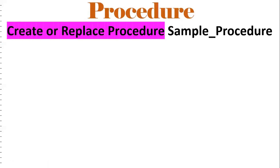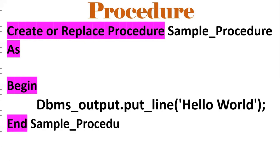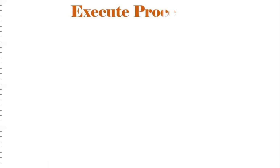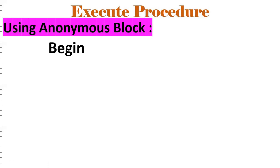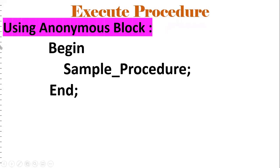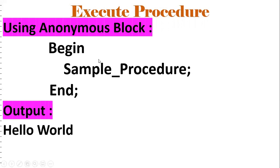Next, you should know how to write a sample procedure. The syntax is: CREATE OR REPLACE PROCEDURE procedure_name AS BEGIN ... END. DBMS_OUTPUT is used to see the result on the console — this is a sample 'Hello World' procedure. To execute a procedure, we use an anonymous block: BEGIN procedure_name; END. You should know how to call a procedure using an anonymous block.